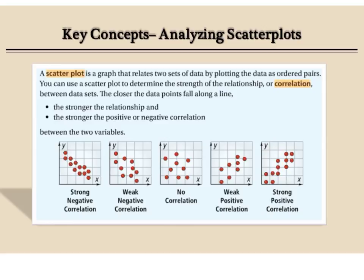A scatter plot is a graph that relates two sets of data and plots the information using ordered pairs. You can use scatter plots to determine the strength of the relationship or its correlation.